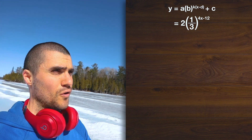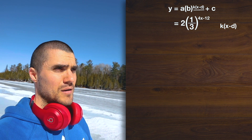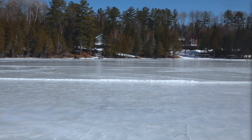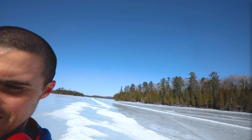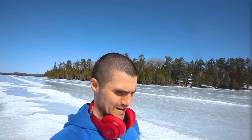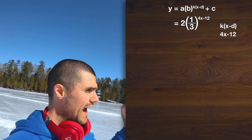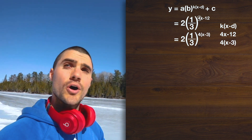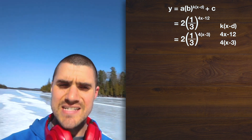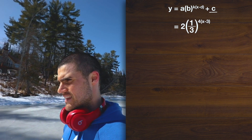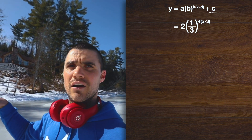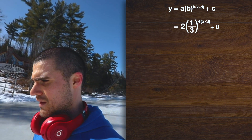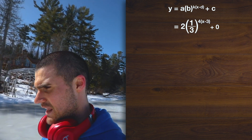Notice that the exponent in the general transformation format is k bracket x minus d. But our exponent is 4x minus 12. We can factor out the 4, so we'd be left with 4 bracket x minus 3. Now that exponent is in that k bracket x minus d format. There's also the plus c, but we don't have that in our specific function — so we can write plus 0. The c value in this case is 0, meaning there's not going to be any vertical shift up or down. And so now we have the function in the general transformation format.